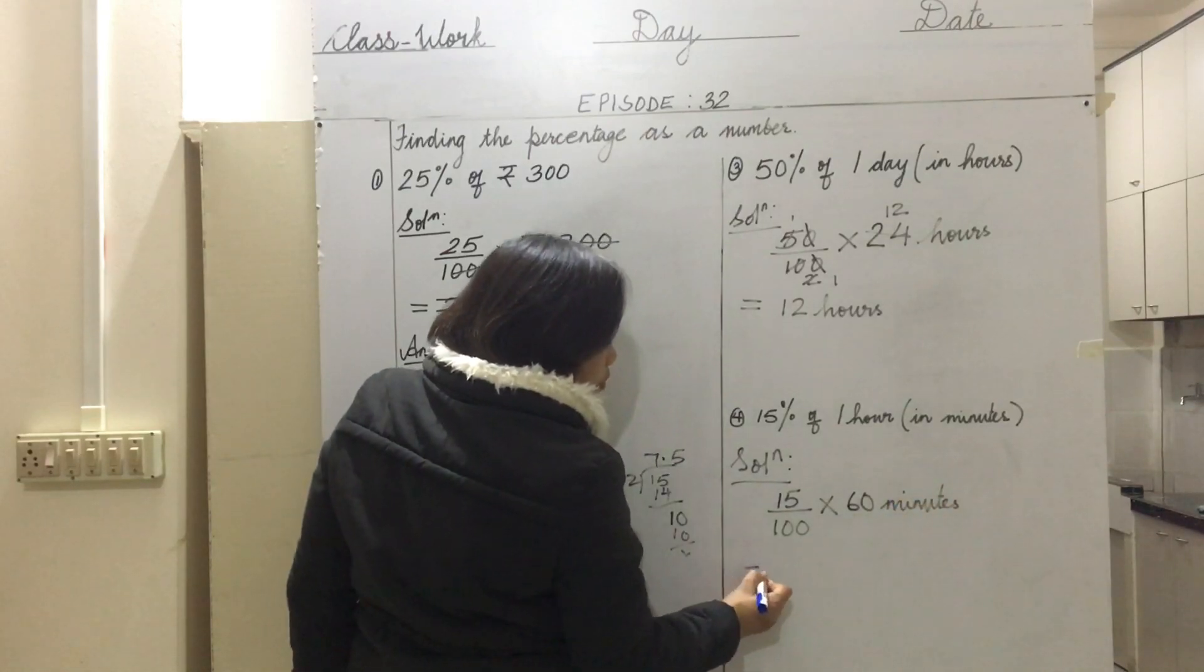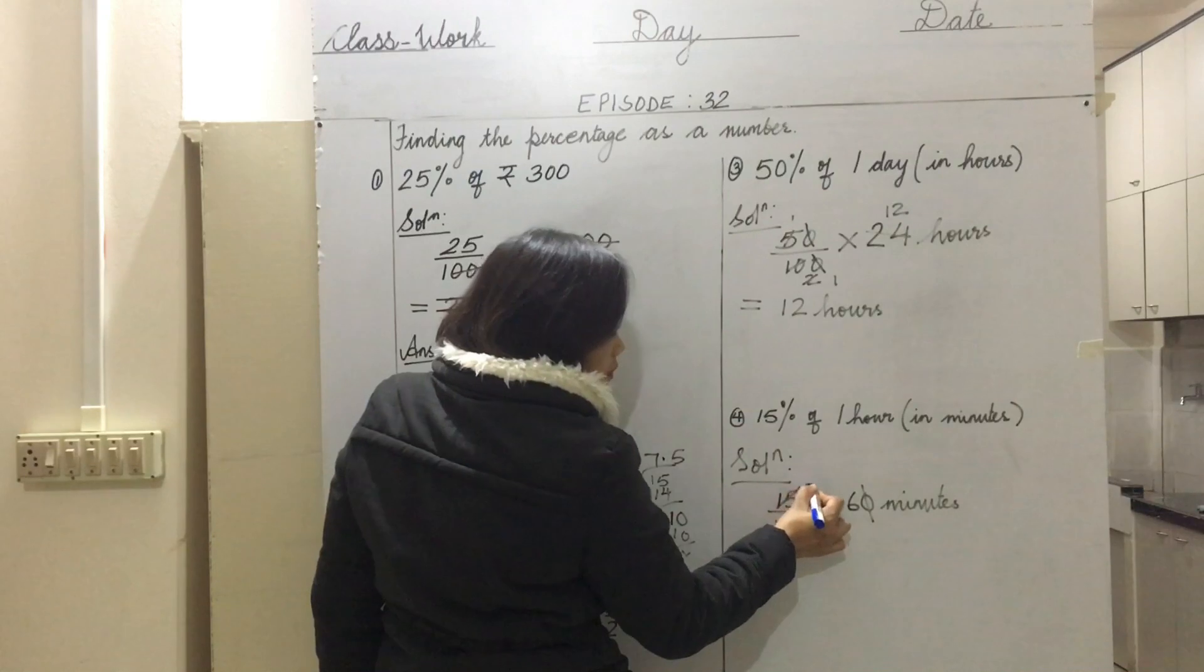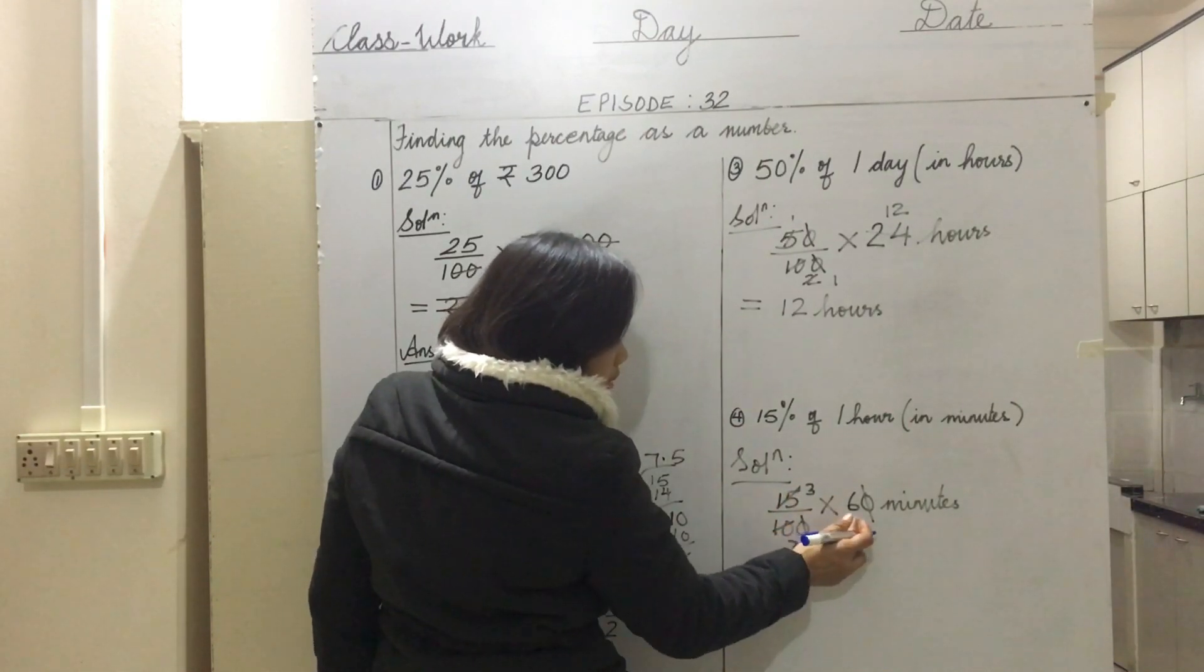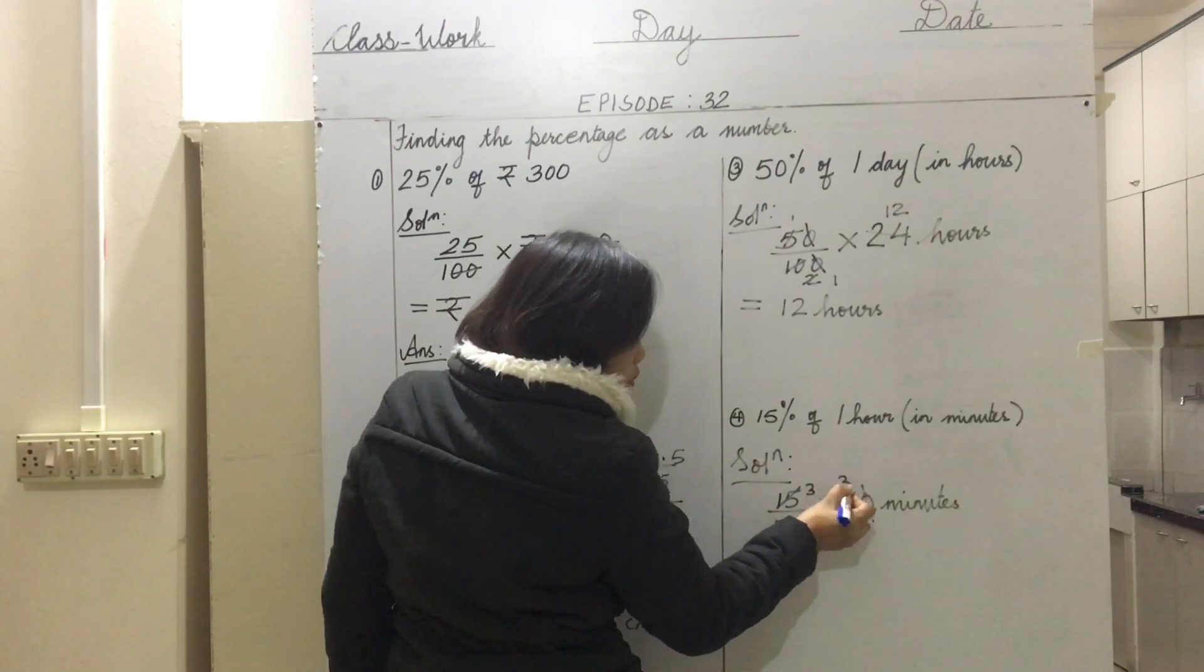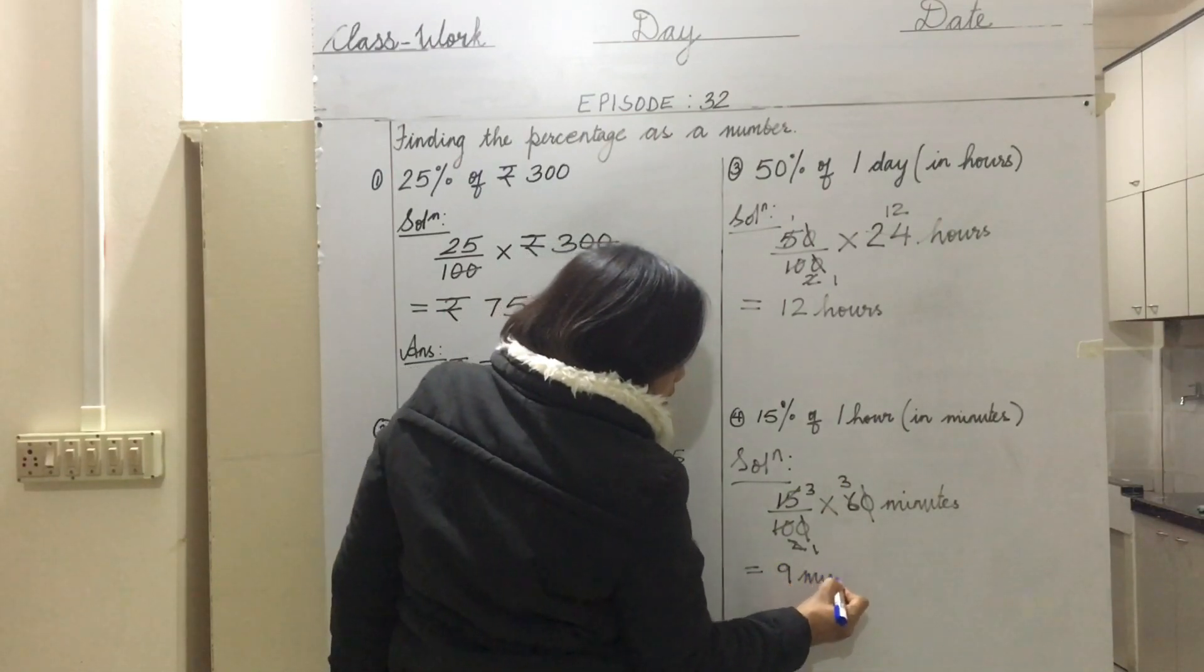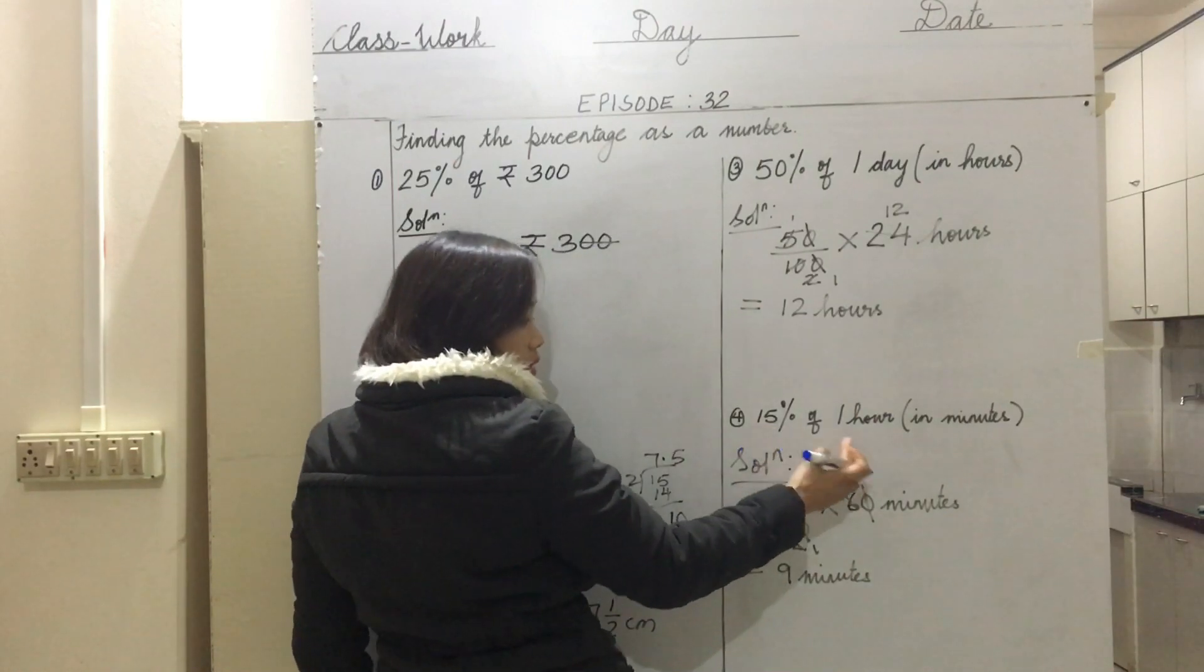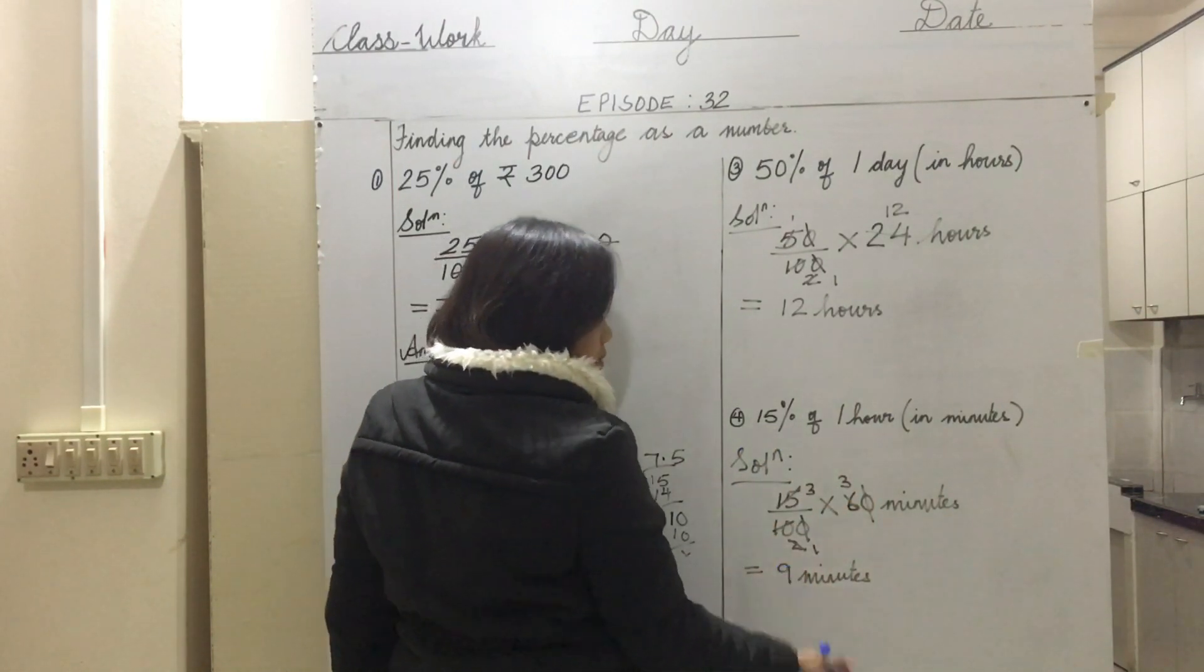Then we reduce again: zero and zero cancel, 5 and 5, then 2 and 6 can still be reduced. So what do we get? 3 times 3 is 9 - 9 minutes. This means 15 percent of one hour in terms of minutes is 9 minutes.